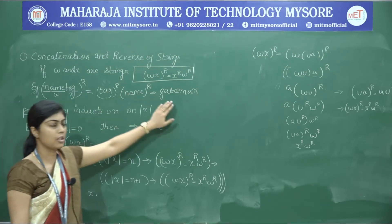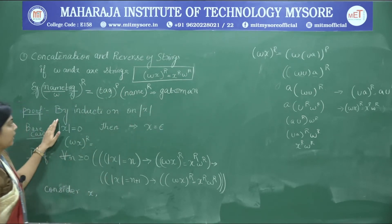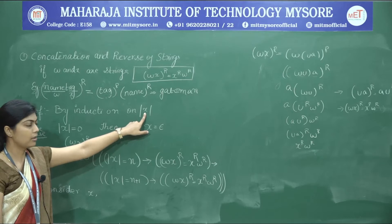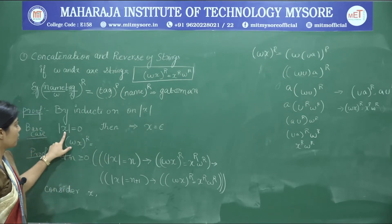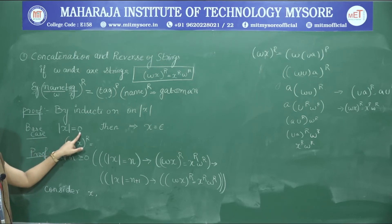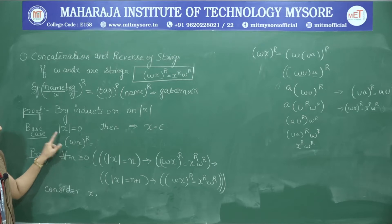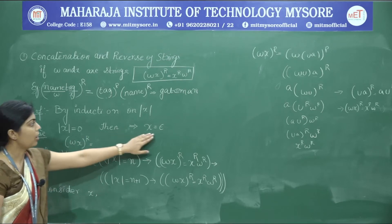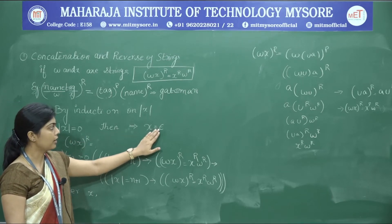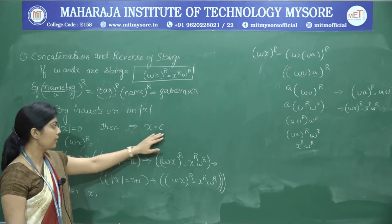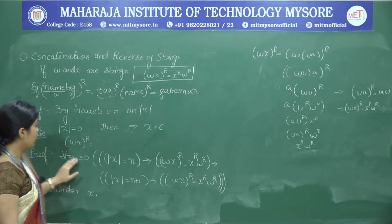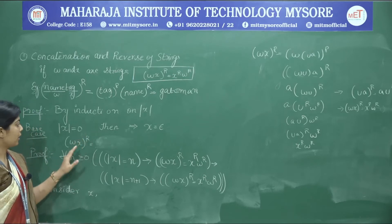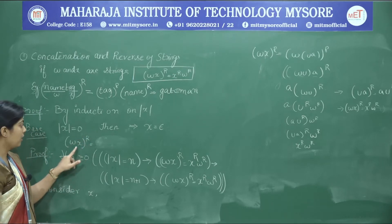So 'nametag' has changed to 'gat-eman'. Now by induction we'll prove the theorem. We'll take up the length of x as the induction element. In the base case, we consider |x| = 0. If any string's length is 0, it must be epsilon — it will not have any character. We take the same identity (wx)^R and try to prove it.